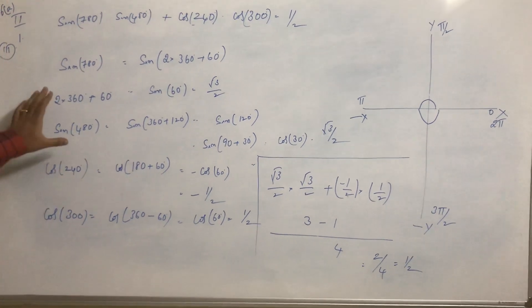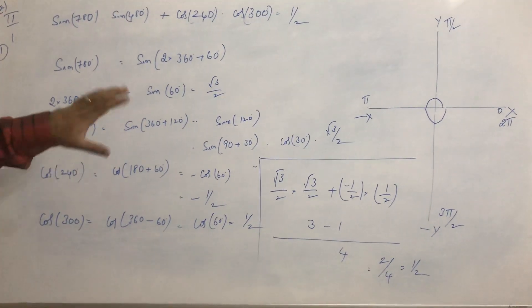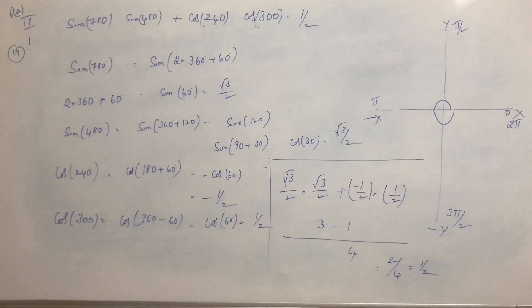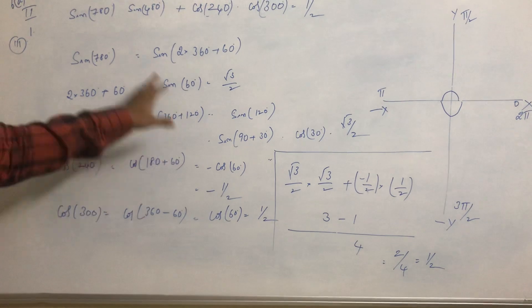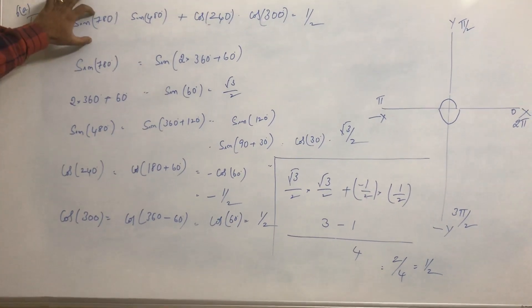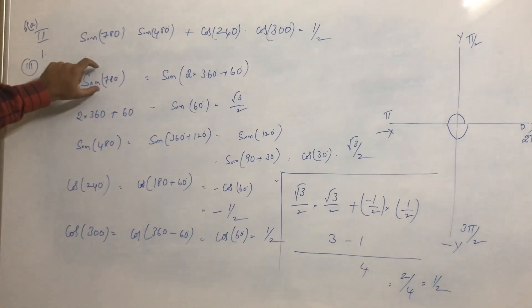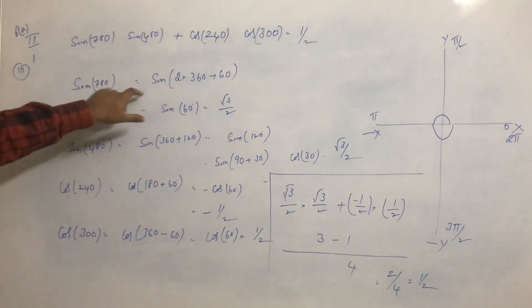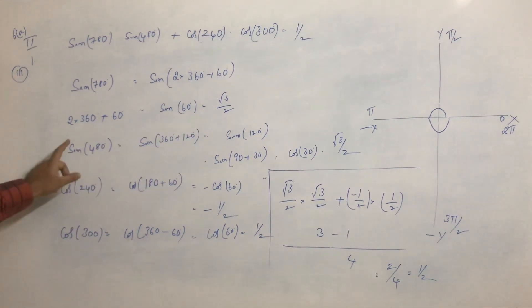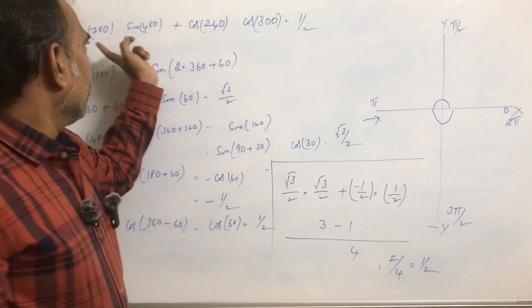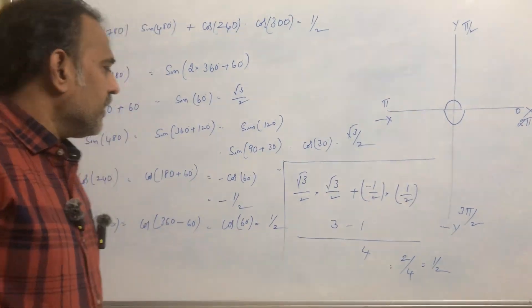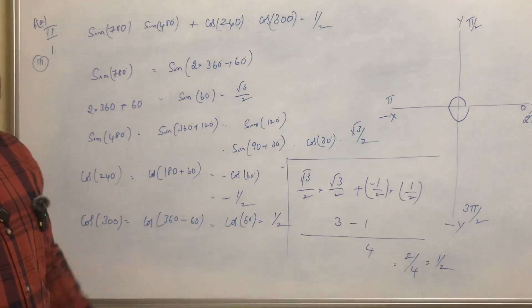These types of problems are normally given for 4 marks. To solve them, you need to take each term, simplify it, find its value, and then substitute each term into the given equation to get the final result. If you have any questions, just let me know.